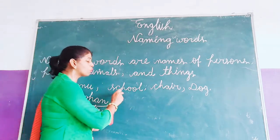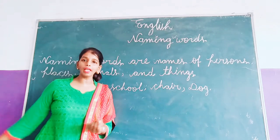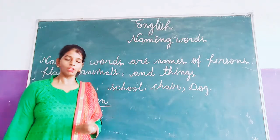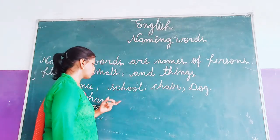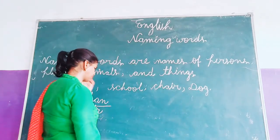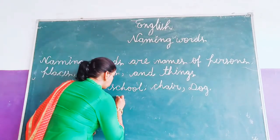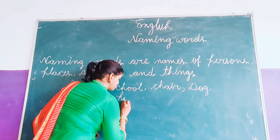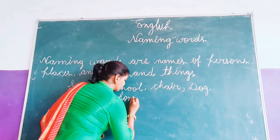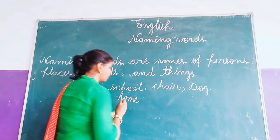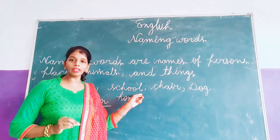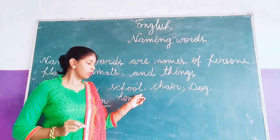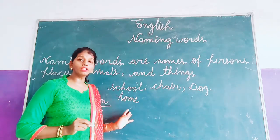The second category is place. School is a place. For example, school, home, hospital — any place name. So any place name is called a naming word.